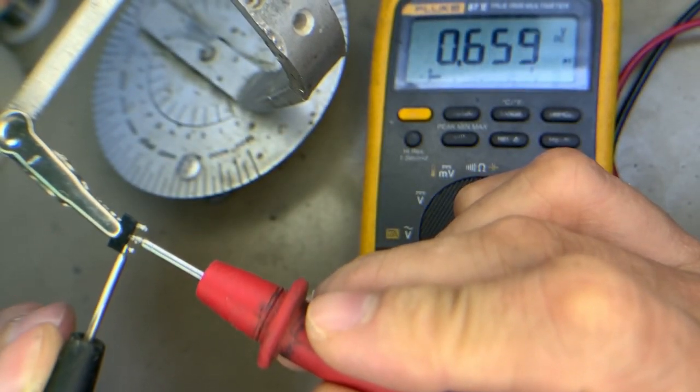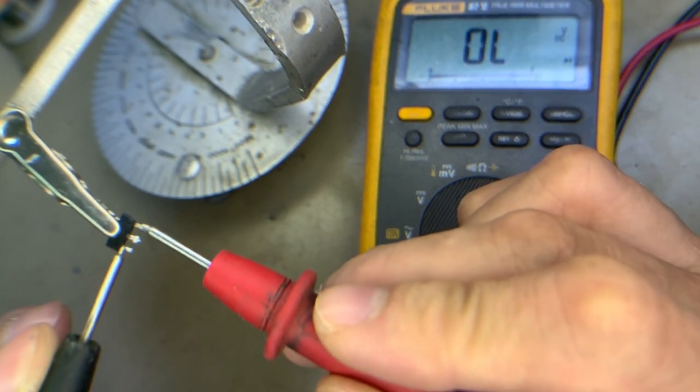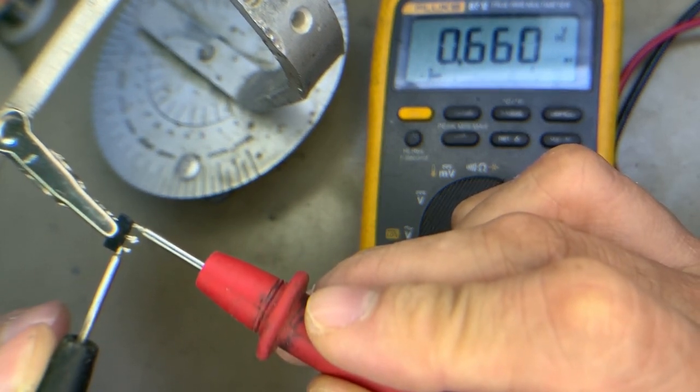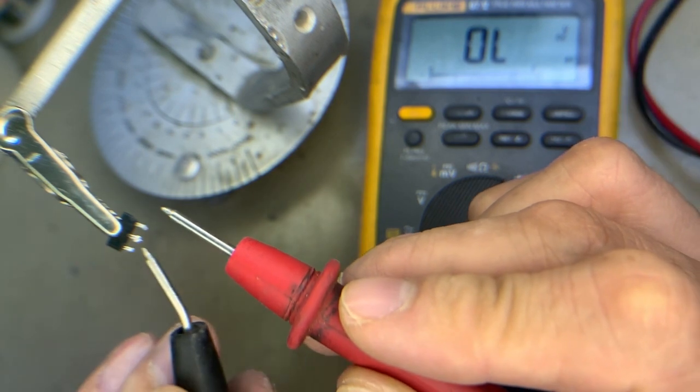And then to emitter, again base to emitter, so it's good. Now the collector to emitter, let's test.